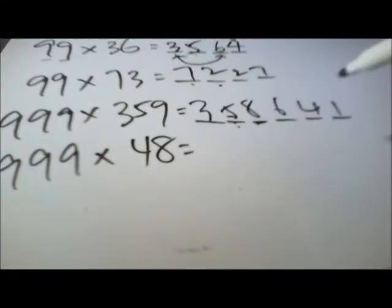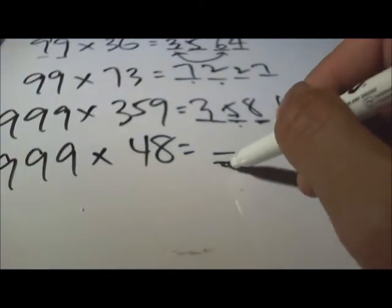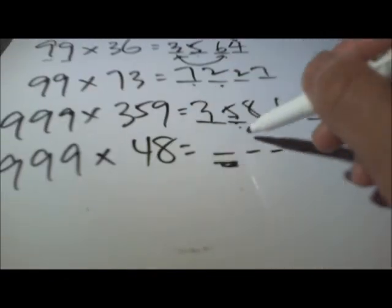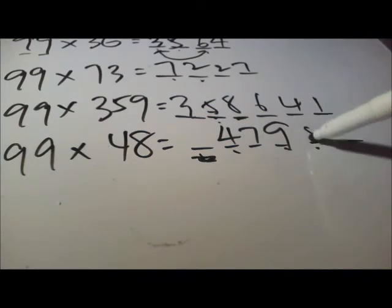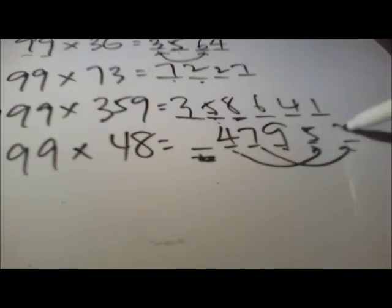So how about 999 times 48? So also you have 3 digits, but of course the first one is empty here because it's nothing. 48 minus 1 is 47. This one, this one compared with this is 0, so this is 9. This is 5 here, and this is 2.